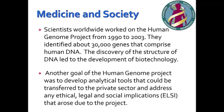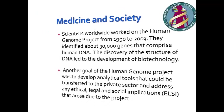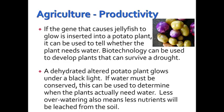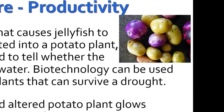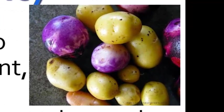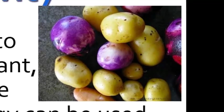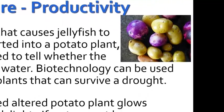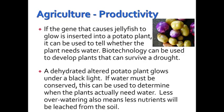Another goal of the Human Genome Project was to develop analytical tools that could be transferred to the private sector and address any ethical, legal, and social implications. If the gene that causes jellyfish to glow is inserted into a potato plant, it can be used to tell whether the plant needs water — allowing biotechnology to develop plants that can survive a drought. A dehydrated altered potato plant glows under black light, helping determine when plants actually need water, meaning less over-watering and fewer nutrients leached from the soil.